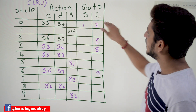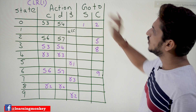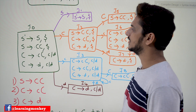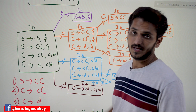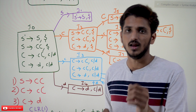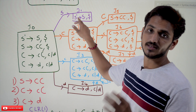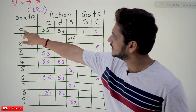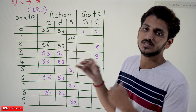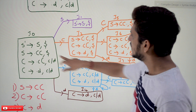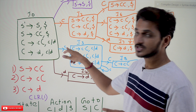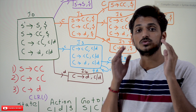Total 10 states are written 0 to 9. On the column side we have two parts: Go-To and Action. Go-To means: if dot is present before a non-terminal, we have done some transition. If there is a transition on a non-terminal, we write it in the Go-To column. For example, on state i0, seeing capital S (a non-terminal), we move to i1 state — that goes in Go-To. Transitions on non-terminals are shown in Go-To.